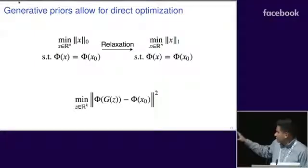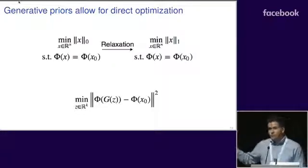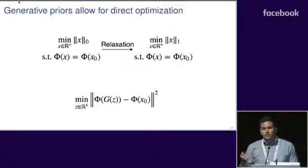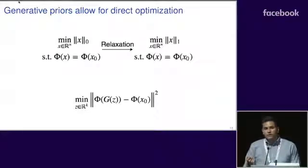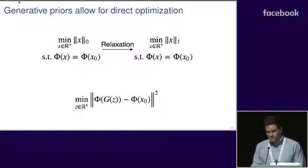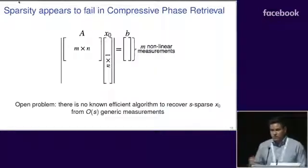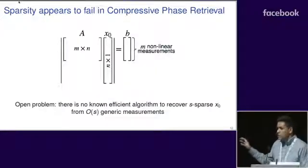Also, when you're looking at this convex surrogate formulation here, if you have nonlinear measurements, penalizing the L1 norm of your solution has shown to fail in certain problems. That's going to be the focus of our attention today in the compressive phase retrieval problem.